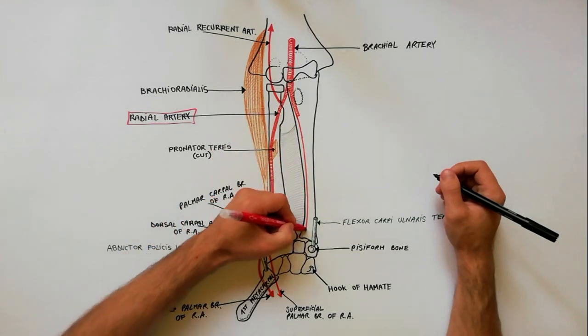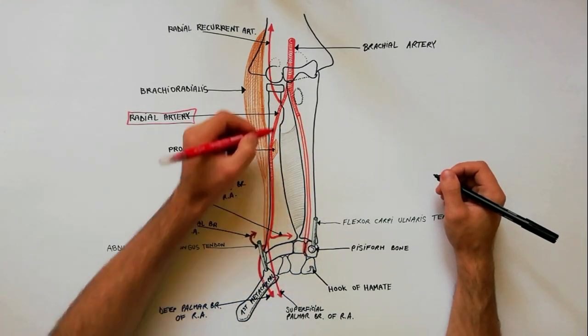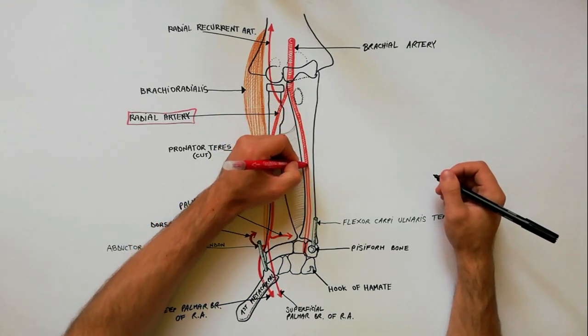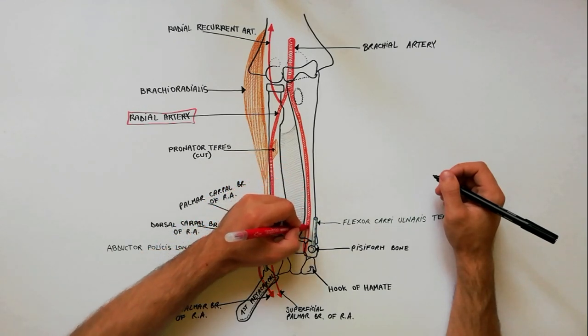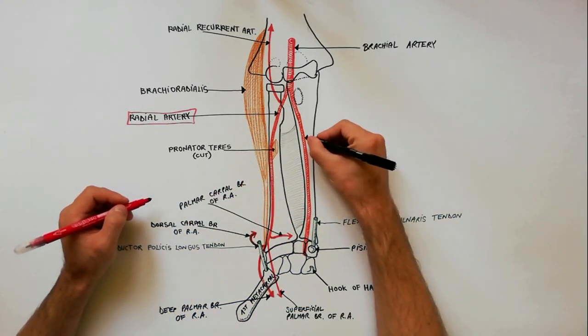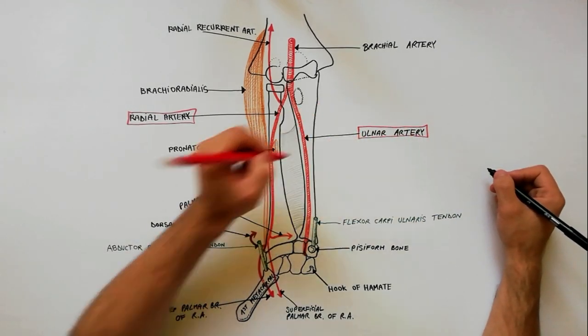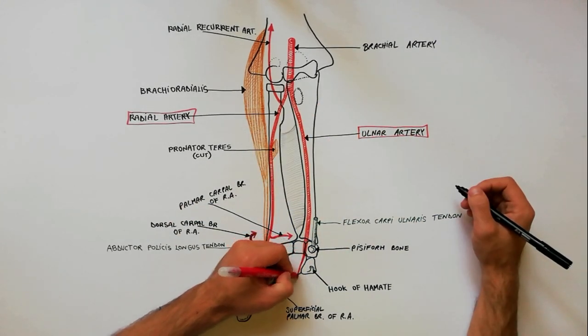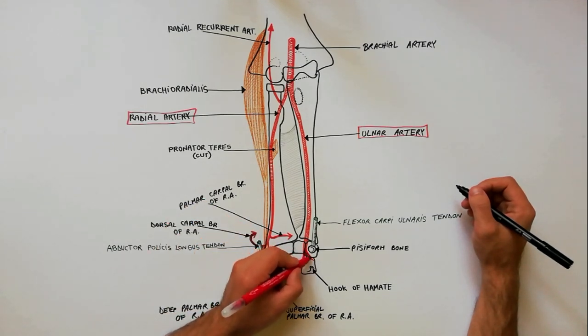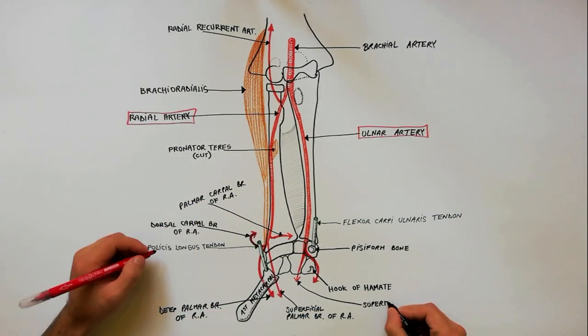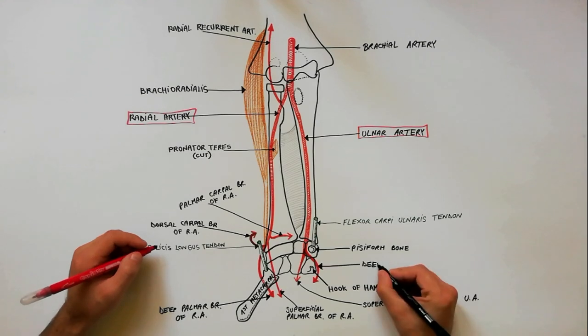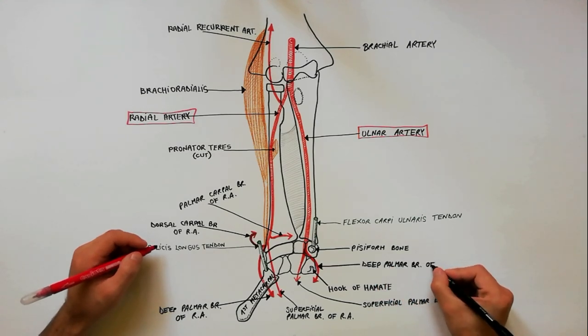The ulnar artery descends in the medial aspect of the anterior compartment of the forearm and distally approaches the tendon of flexor carpi ulnaris, lying laterally to it. Just distally to the pisiform bone, the ulnar artery divides into superficial palmar branch and the deep palmar branch of ulnar artery.